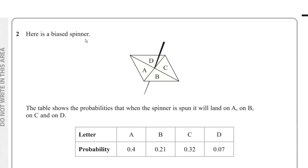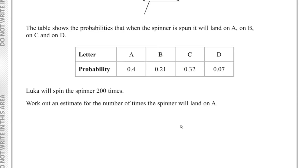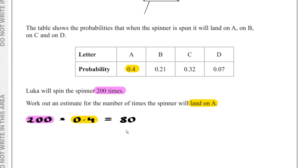Question 2: Here is a biased spinner. The table shows the probabilities that when the spinner is spun it will land on A, B, C, and D. Luca will spin the spinner 200 times. We have to work out an estimate for the number of times the spinner will land on A. The probability that the spinner lands on A is 0.4, so 200 × 0.4 = 80. We estimate the spinner will land on A 80 times.